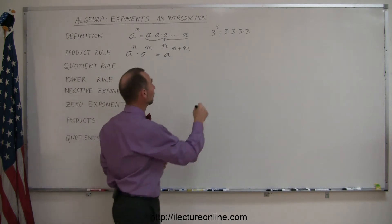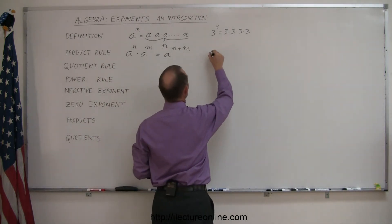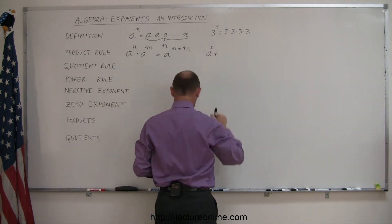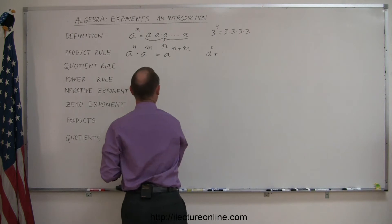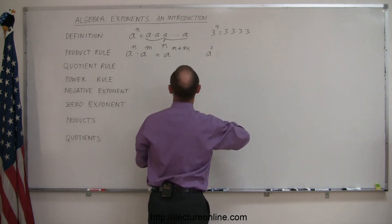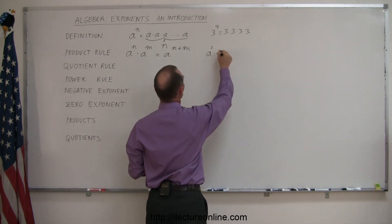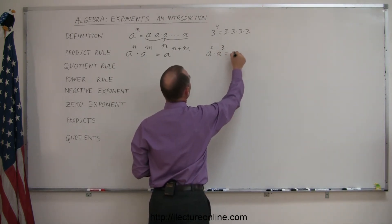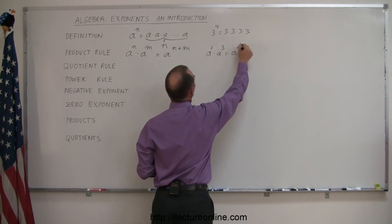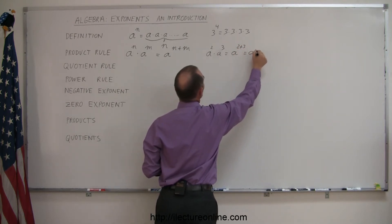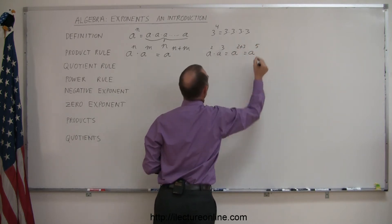As an example, if we have a to the second power times a to the third power, this is simply a to the 2 plus 3, or a to the fifth power.